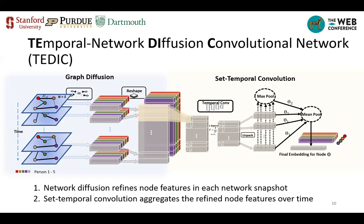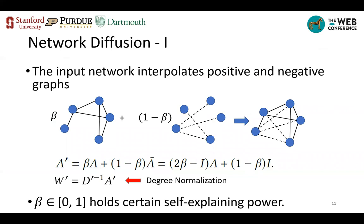Here's an overview of our framework: Temporal Network Diffusion Convolutional Network, or TATIC. Our input is one dynamic social interaction network. In the first module, we apply network diffusion within each snapshot to obtain one feature per person, modeling how people interact and influence each other in real time. Then a set temporal convolutional network is applied to filter, collect, and further process behavioral patterns scattered over time for each person.